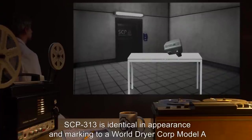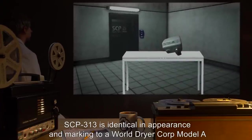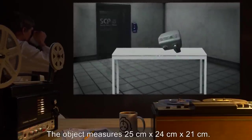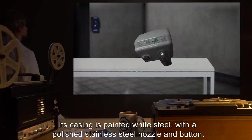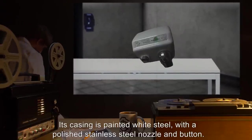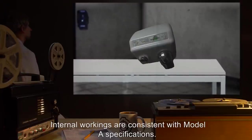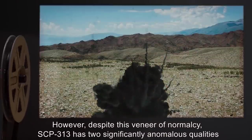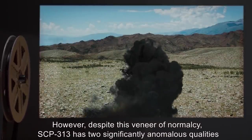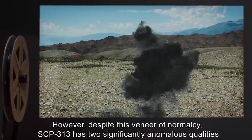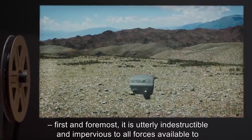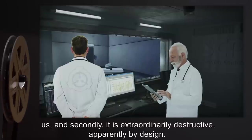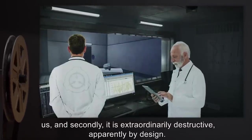Description: SCP-313 is identical in appearance and marking to a World Dryer Corp. Model A electric hand dryer. The object measures 25 centimeters by 24 centimeters by 21 centimeters. Its casing is painted white steel with a polished stainless steel nozzle and button. Internal workings are consistent with Model A specifications. However, despite this veneer of normalcy, SCP-313 has two significantly anomalous qualities. First and foremost, it is utterly indestructible and impervious to all forces available to us. And secondly, it is extraordinarily destructive, apparently by design.